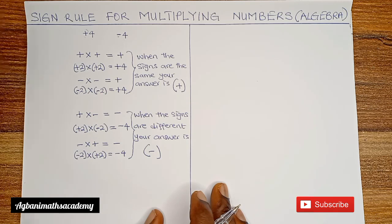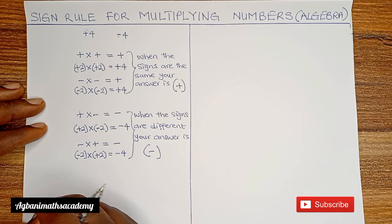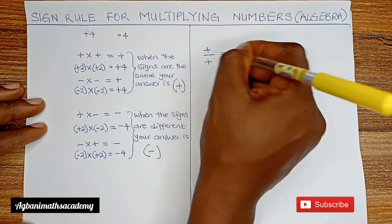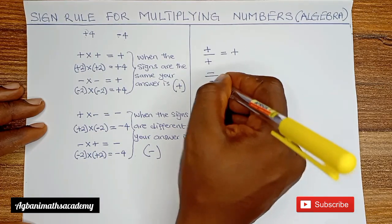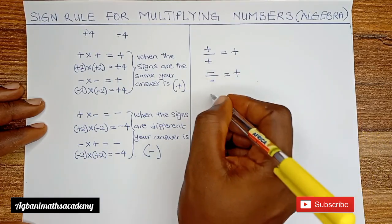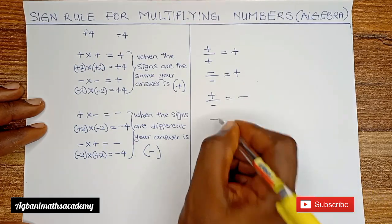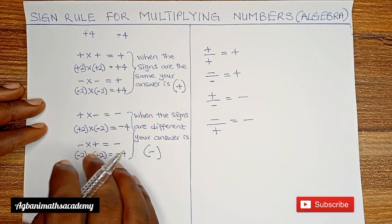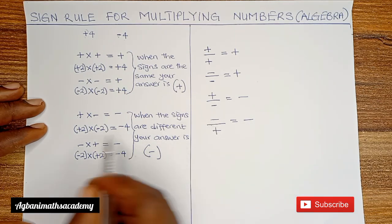This same process also applies to division of numbers or algebra. Plus divided by plus gives plus. Minus divided by minus gives plus. Plus divided by minus gives minus. And minus divided by plus gives minus. The same sign rules used in multiplication can be applied in division — the only difference is the operation itself.